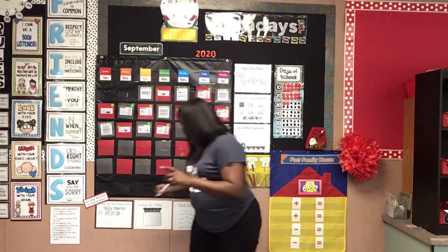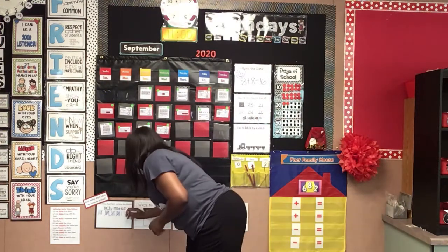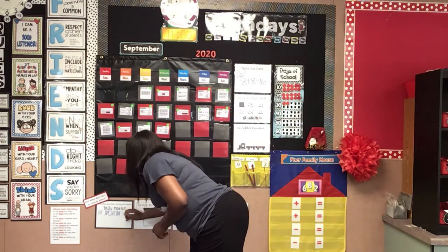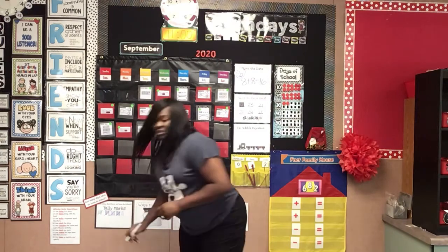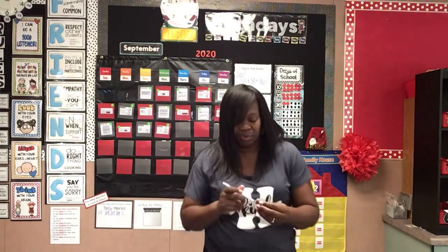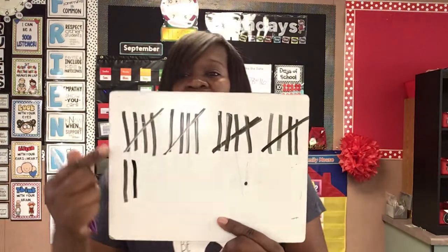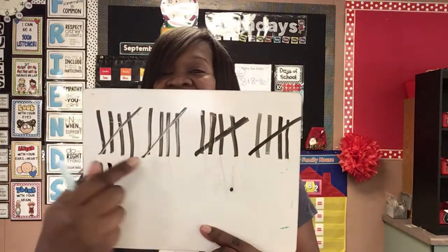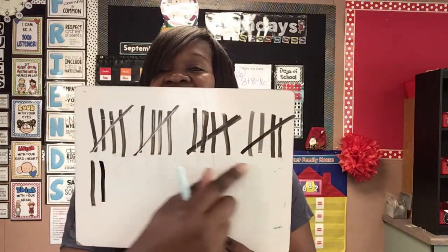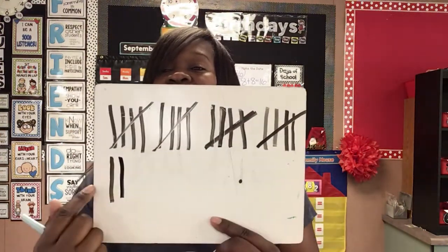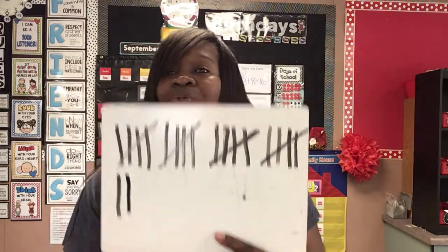Now it's time for my tally mark. We've been here 22 days. I want to show you what it looks like up close because it's 5, 10, 15, 20, 21, 22. We've been in school for 22 days.